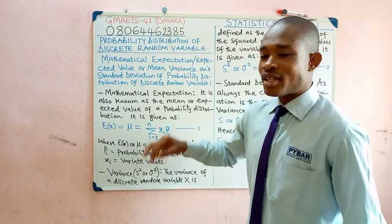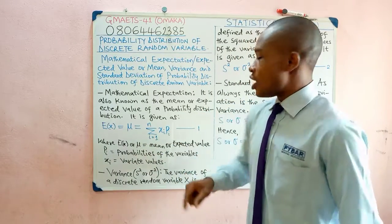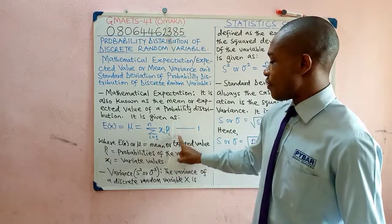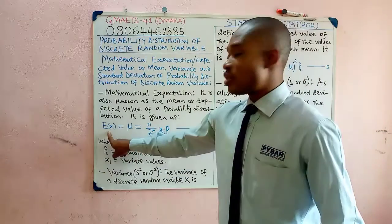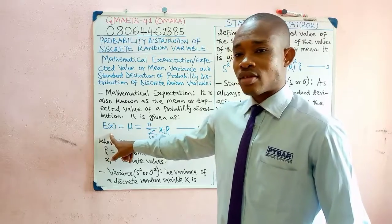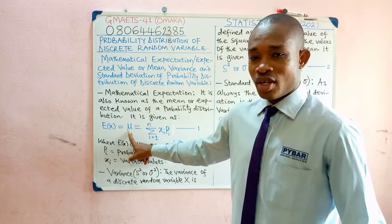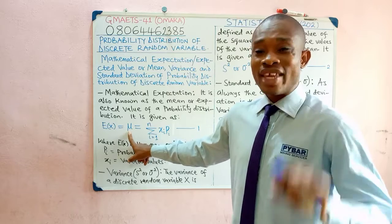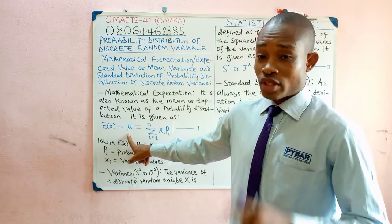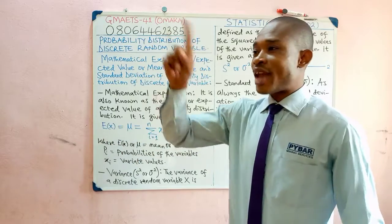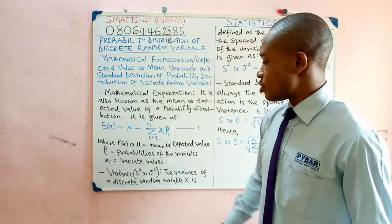Mathematically, this expected value, also known as the mean of a probability distribution, is given by equation 1 here on the board. We use either the symbol E(x) or the symbol μ (mu). It's the same as the mean, but this is the symbol we use for it. Take note — it's now replacing x-bar under probability distribution.